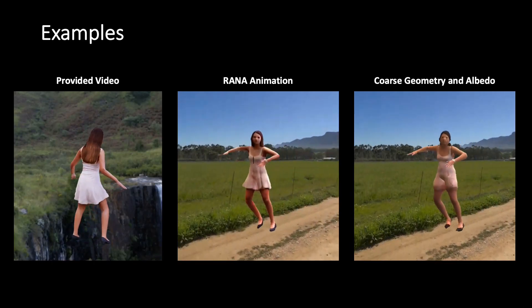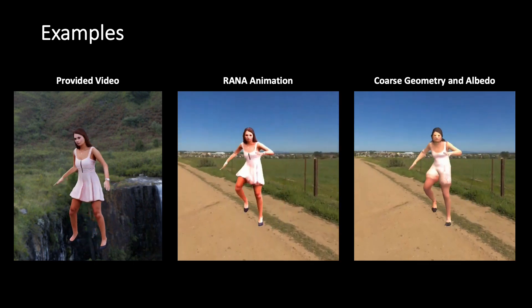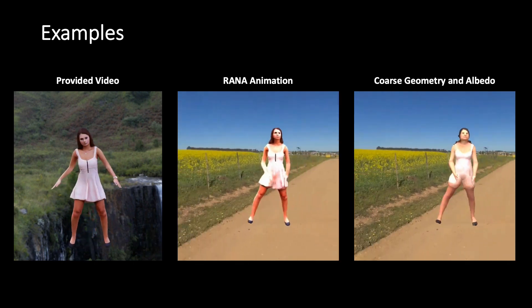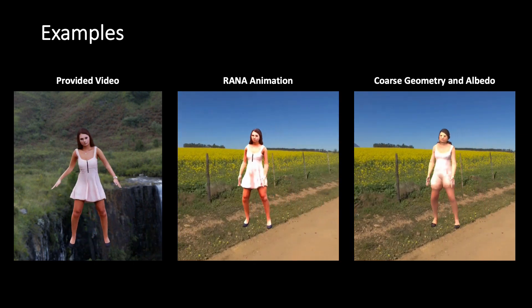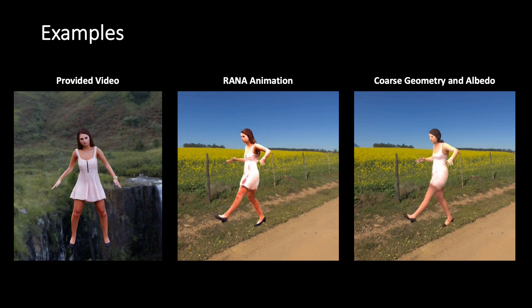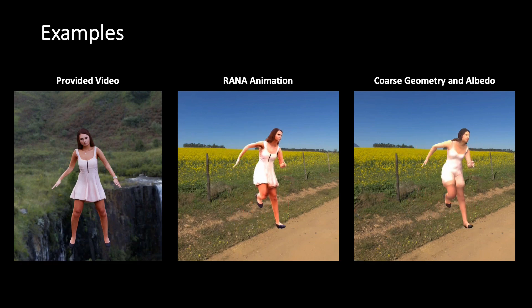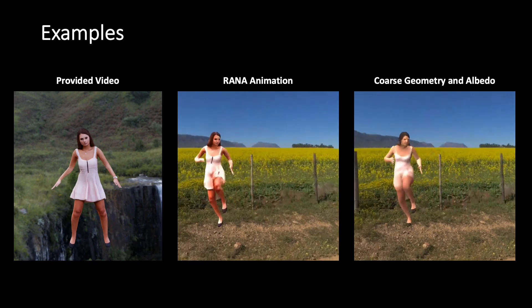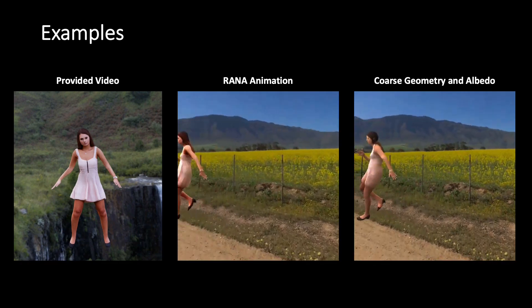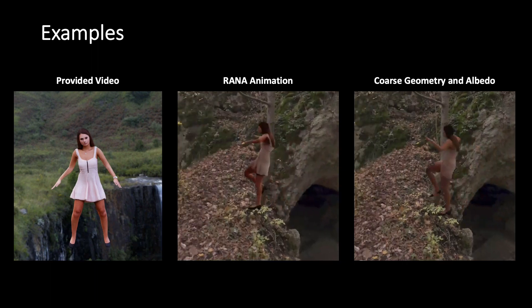Here is an example of the created avatar and its animation in novel body poses and lighting. We also show the renderings of coarse albedo and texture on the right side. We can clearly see the improvements brought by RANA over the coarse albedo texture and geometry.